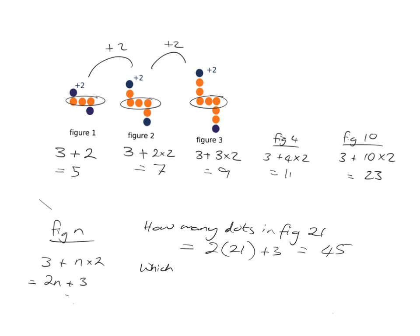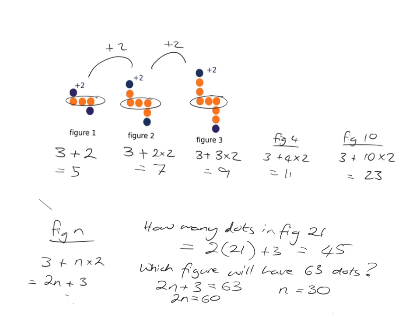And then we can also actually do it the other way: which figure will have 63 dots? Well now we want to say that 2n plus 3 — because that's the number of dots — must be equal to 63. And we've got a little equation to solve, so we'll say 2n is 60, subtracting 3 from both sides of the equation. Then divide both sides by 2 and we get that n is 30. So this tells us that figure 30 has 63 dots.